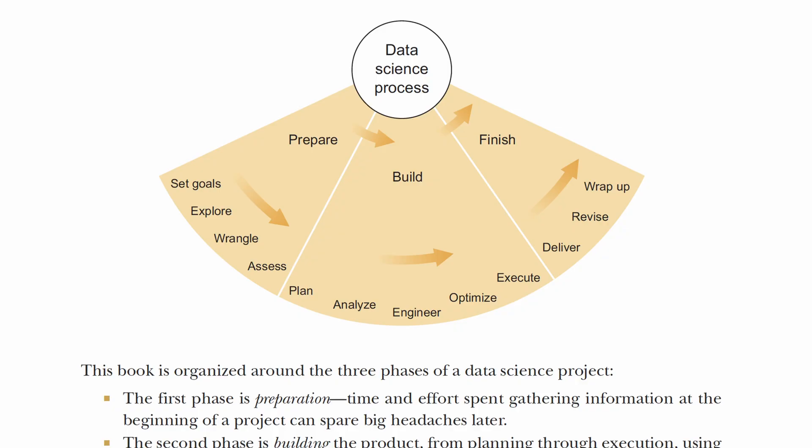That book also discusses the difference between causation and correlation, and gives examples of inferences, statistical learning, and more. A second book I recommend is 'Think Like a Data Scientist,' which covers the whole life cycle of a data science project — from preparation to building to finishing. We don't always start with code; we start with the thinking process. Now, let's imagine you have all the cognitive abilities — how do you visualize it?